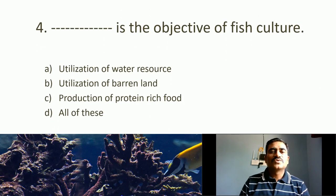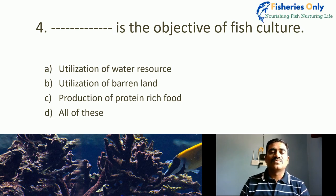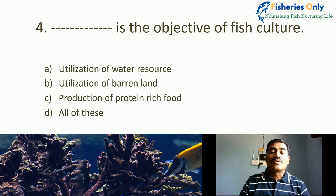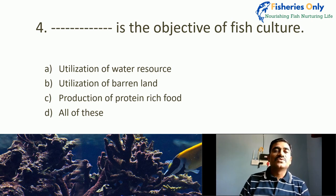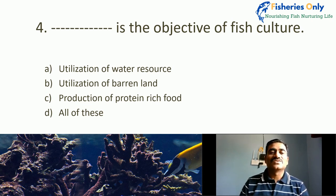Fourth MCQ: What is the objective of fish culture? Options are: utilization of water resources, utilization of barren land, production of protein-rich food, and D — all of these. The most important objectives of fish culture are utilization of available water resources, production of protein-rich food, and utilization of barren land. Hence the correct answer is all of these.